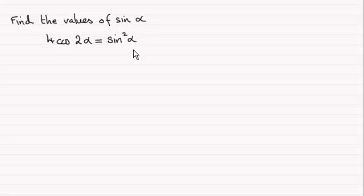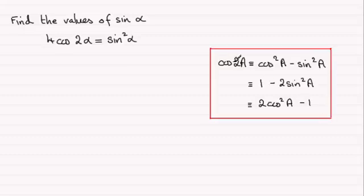So to do this, we've got to turn to the double angle formula. Hopefully you're familiar with this: cosine of 2a is identical to cos squared a minus sine squared a, or it's 1 minus 2 sine squared a, or 2 cos squared a minus 1.